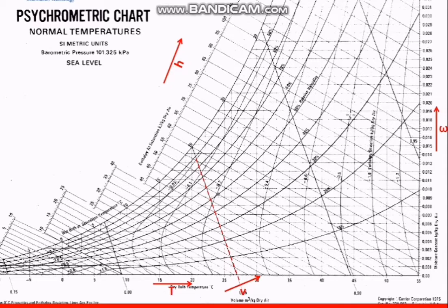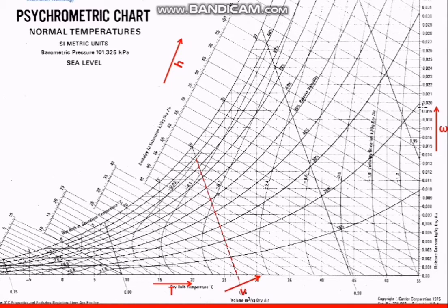One of the most important properties found on the psychometric chart is the dew point. The dew point is the temperature at which a vapor starts condensing. For example, say we have an air-vapor mixture with a humidity ratio of 0.02.